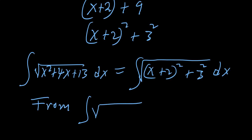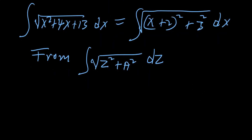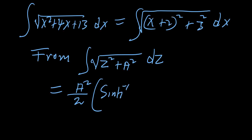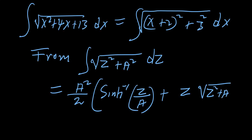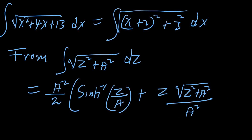From the standard formula: the integral of root(z squared plus a squared) dz equals a squared over 2 times sinh inverse of (z over a), plus z times root(z squared plus a squared) over 2, all in parenthesis, plus C.